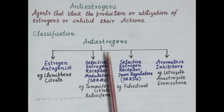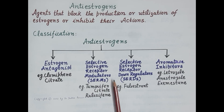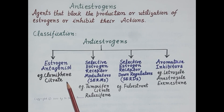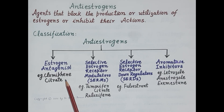Talking about the classification, anti-estrogens are classified as estrogen antagonists, selective estrogen receptor modulators, selective estrogen receptor down-regulators, and aromatase inhibitors. The first category of anti-estrogens are estrogen antagonists — for example, clomiphene citrate. It blocks estrogen receptors, so physiological actions of estrogen are blocked, and this is perceived as a deficiency of estrogen by the body.